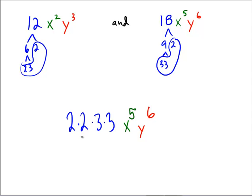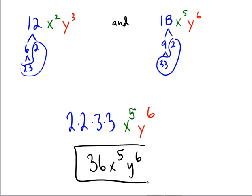At the end, 2 times 2 is 4, times 3 is 12, times 3 is 36, x⁵y⁶, and this is our least common multiple.